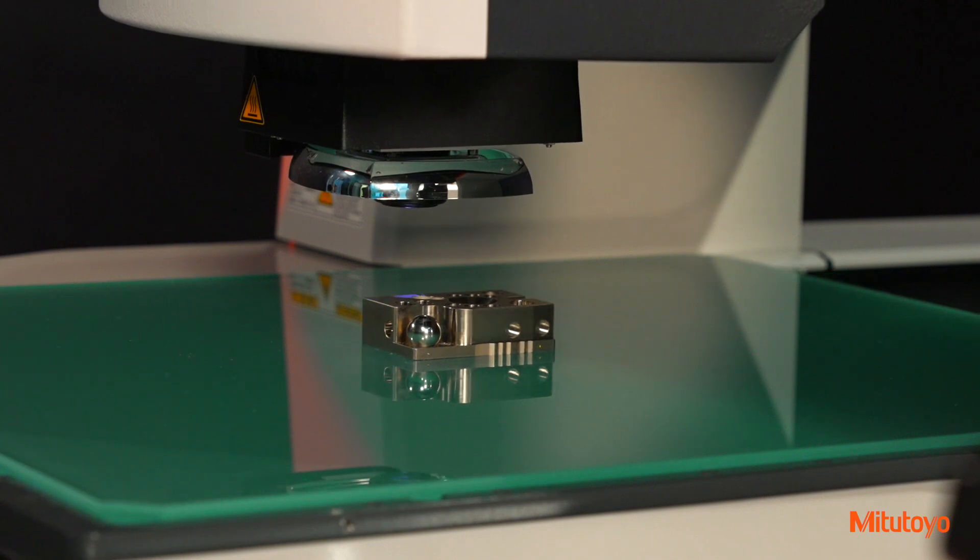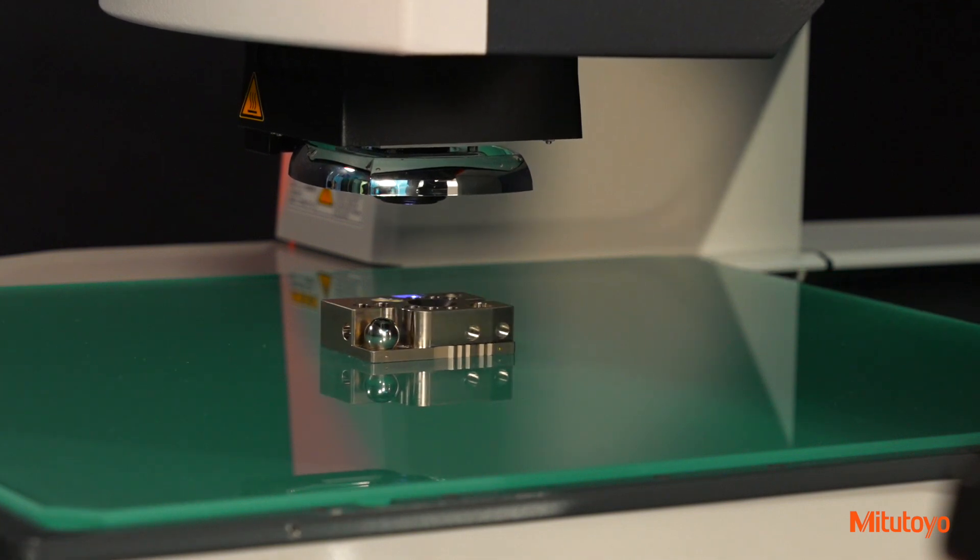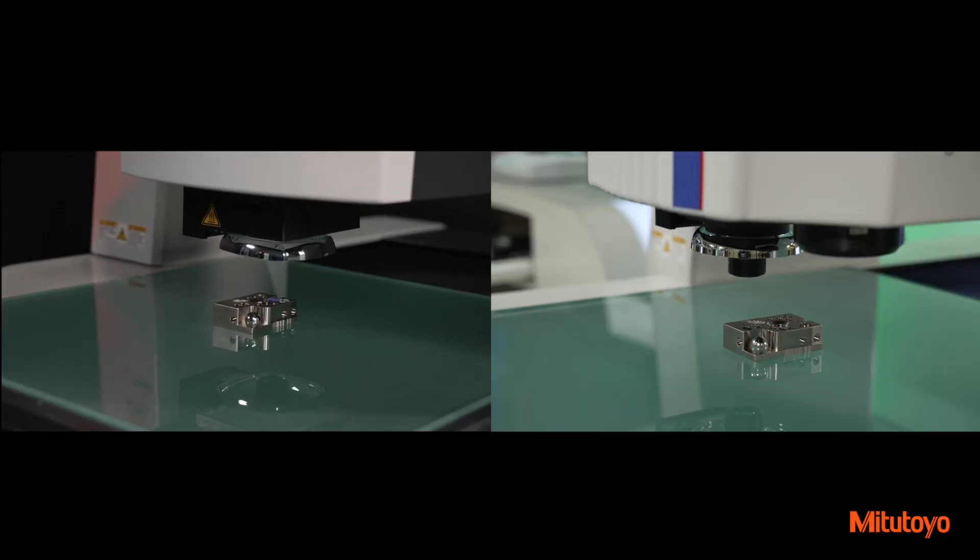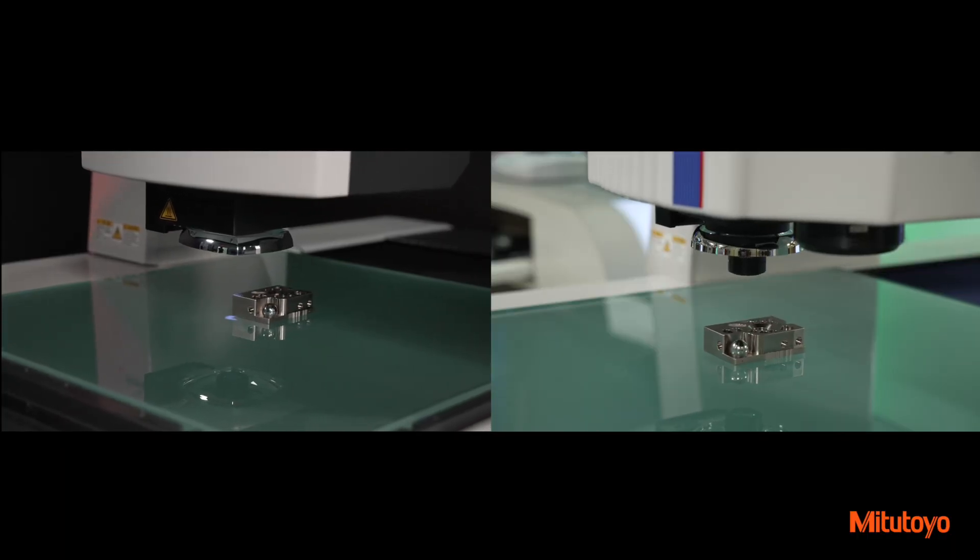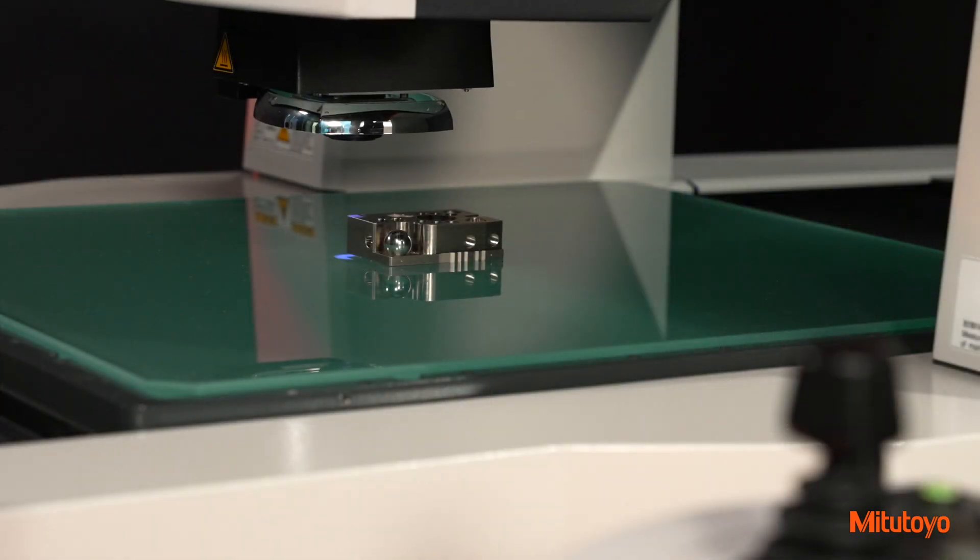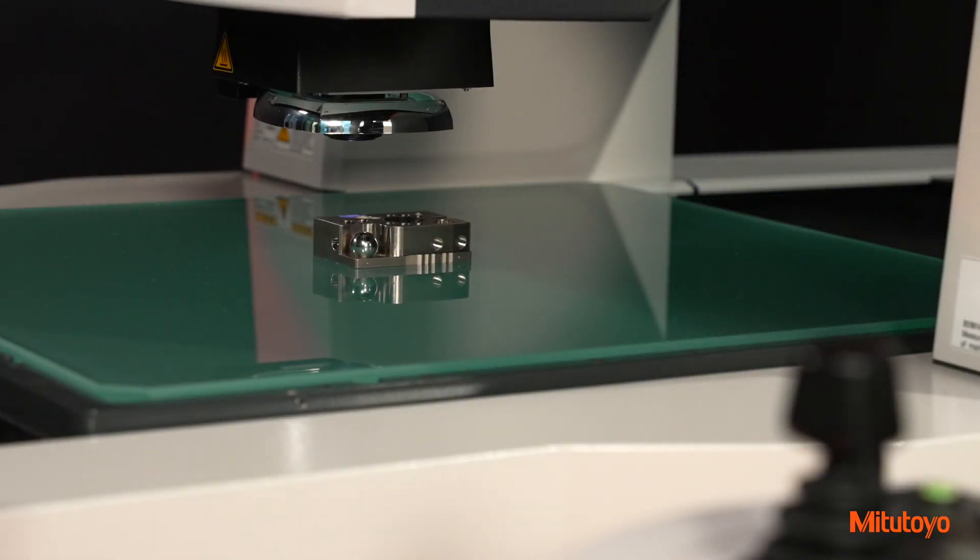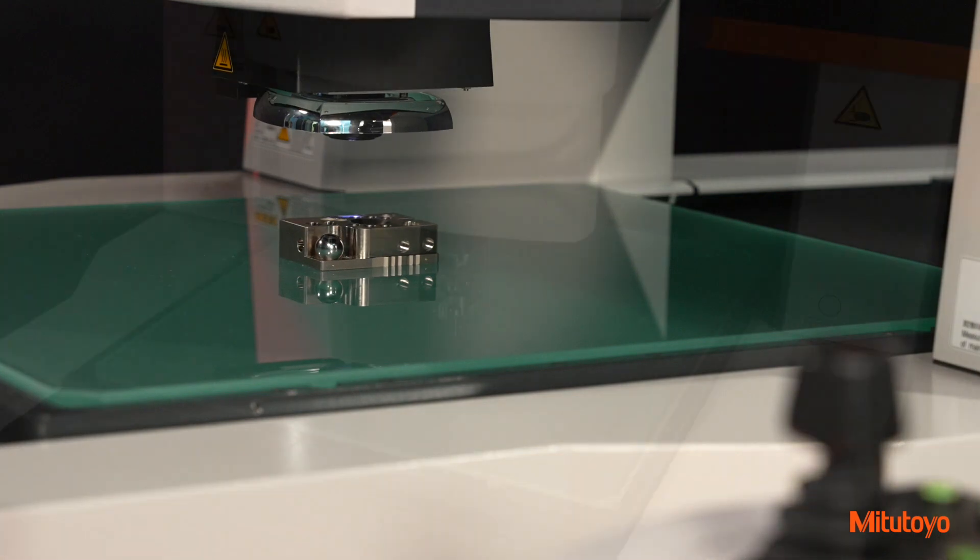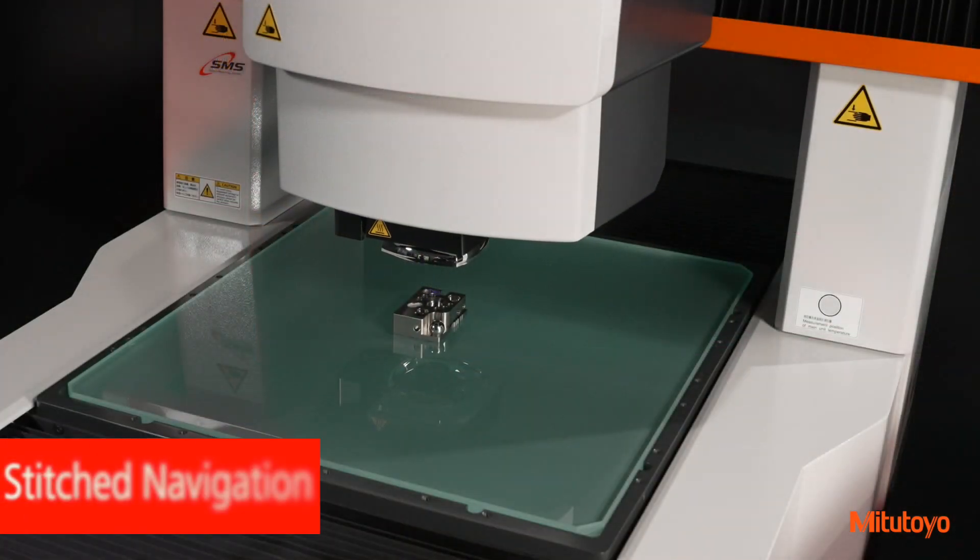Unlike other vision machine models, Mitsutoyo's QuickVision machines are highly accurate along the Z-axis. With Mitsutoyo's autofocus, there's no need for an additional sensor for Z-axis measurements. Thus, flatness, heights, depths, etc. can be measured solely by the camera. QuickVision Pro adds stitched navigation.